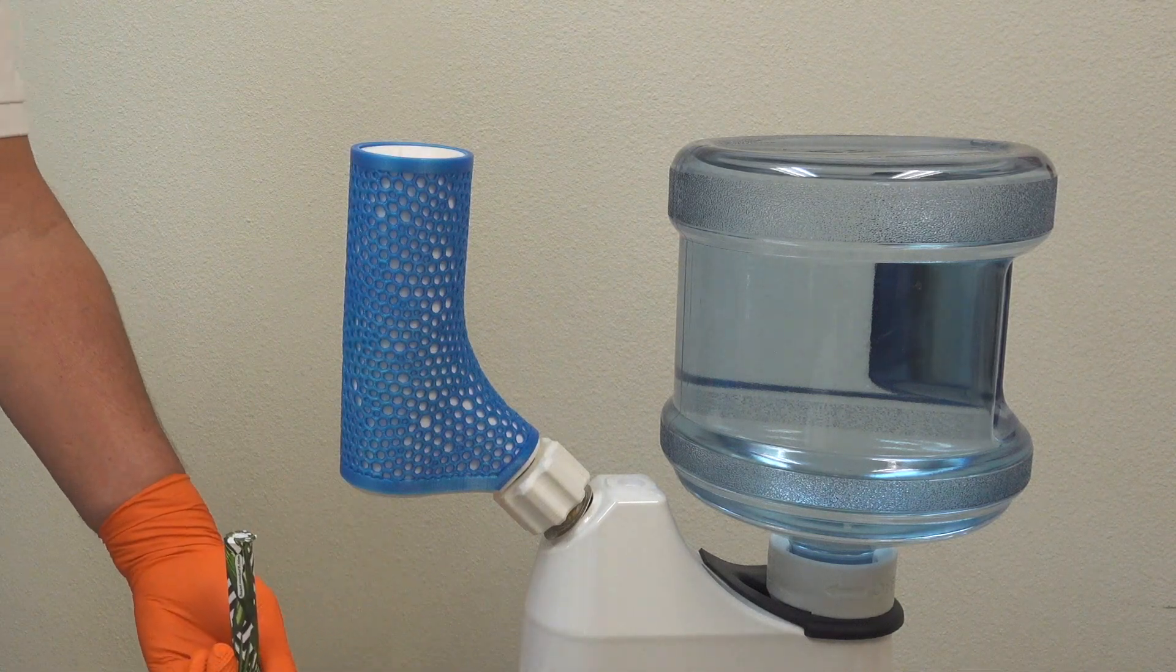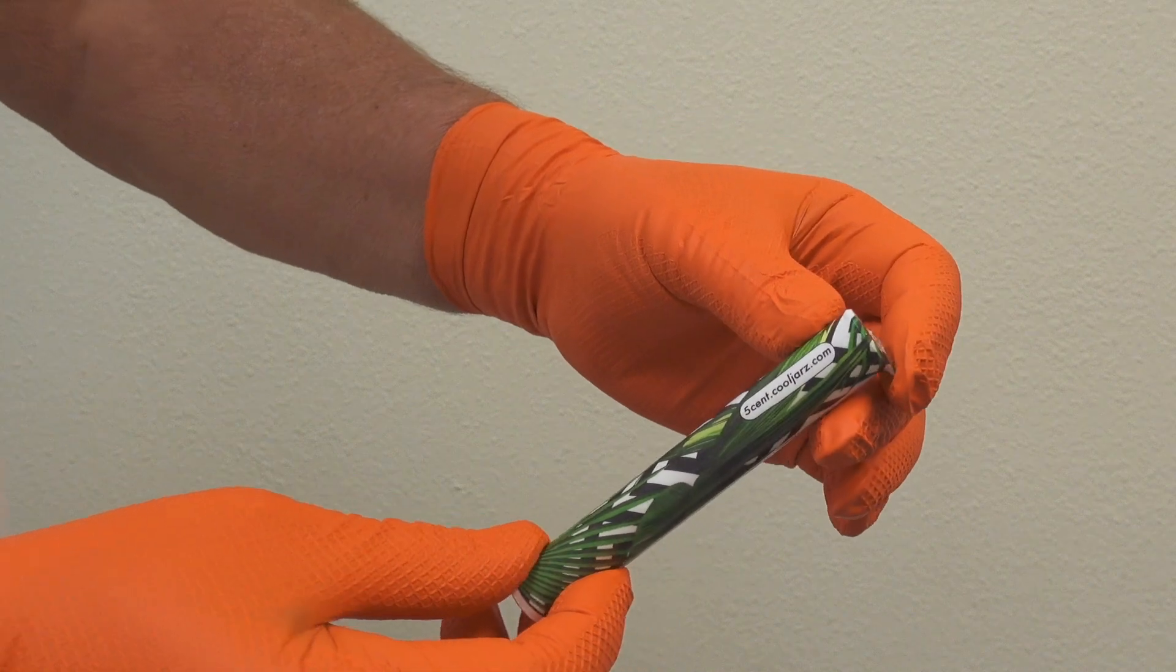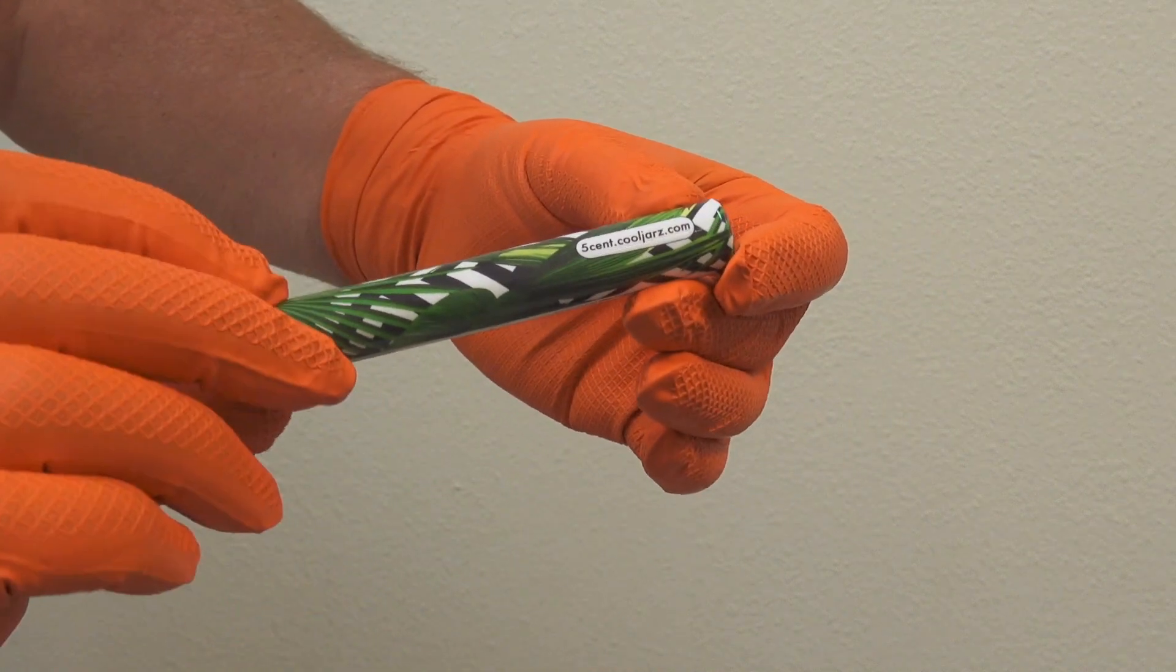Boom. You're done. You've just wrapped, sealed, and branded one of your products in a CoolJars tube in about one second.